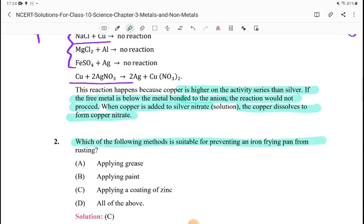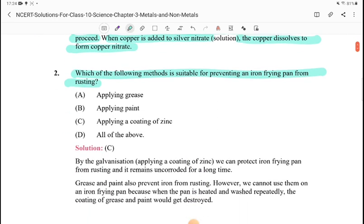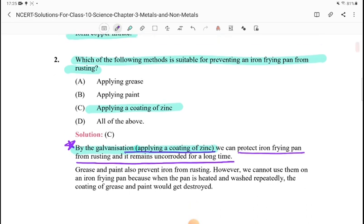Question 2: Which of the following method is suitable for preventing an iron frying pan from rusting? The answer is C: applying a coating of zinc. By galvanization, applying a coating of zinc, we can protect iron frying pan from rusting and it remains uncorroded for a long time. There will not be corrosion. We will do zinc coating.